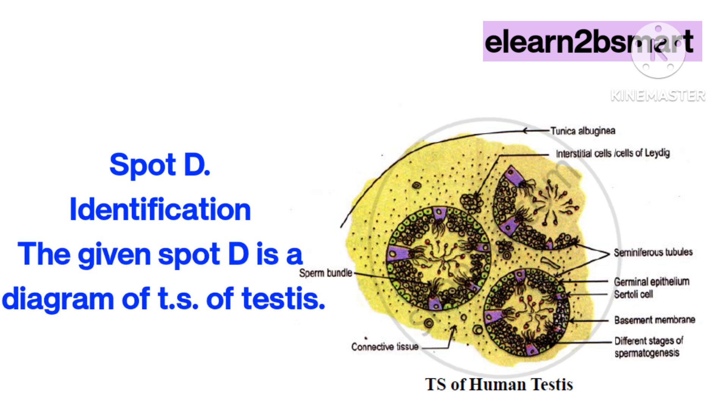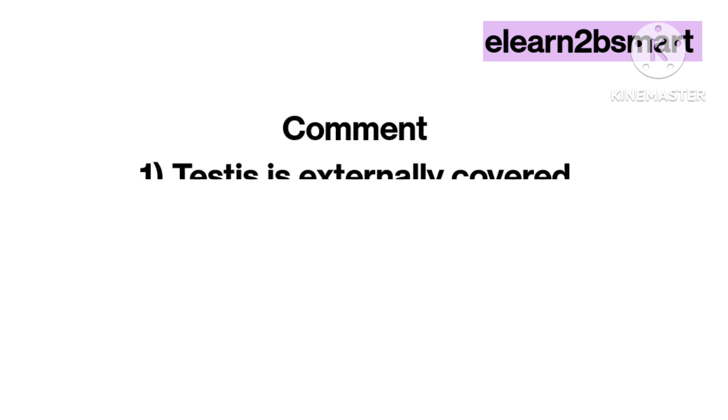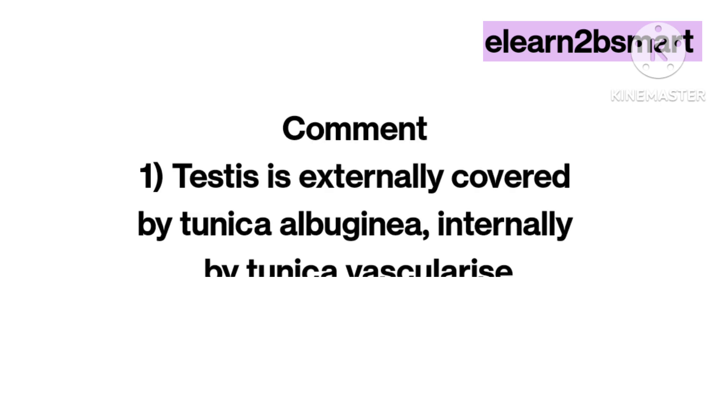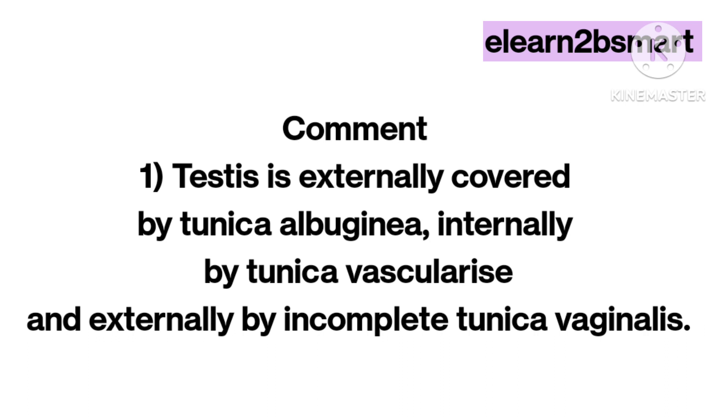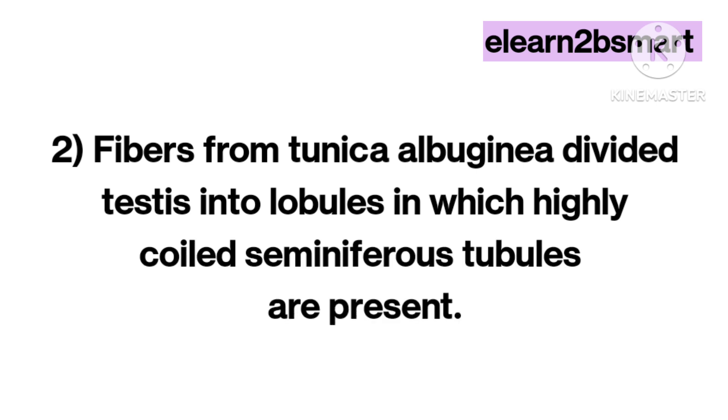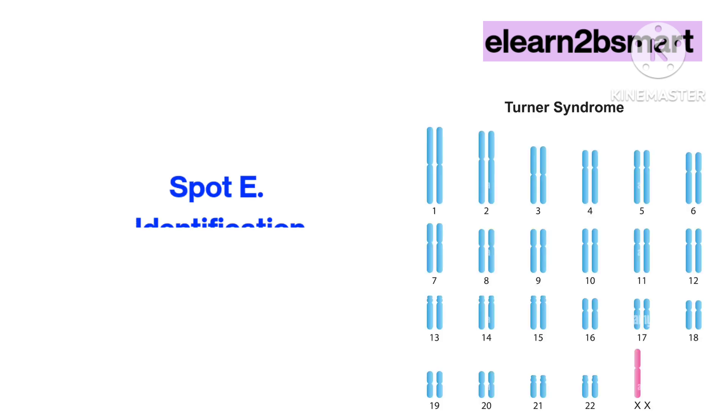Spot D identification: The given spot D is a diagram of transverse section of testis. Comments: 1. Testis is externally covered by tunica albuginea, internally by tunica vascularis, and externally by incomplete tunica vaginalis. 2. Fibers from tunica albuginea divide testis into lobules in which highly coiled seminiferous tubules are present.